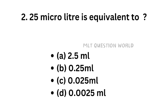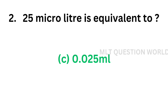Question number 2. 25 microliter is equivalent to: option A, 2.5 ml; option B, 0.25 ml; option C, 0.025 ml; option D, 0.0025 ml. The correct answer is option C, 0.025 ml. 25 microliter is equivalent to 0.025 ml.